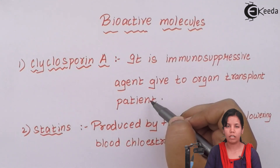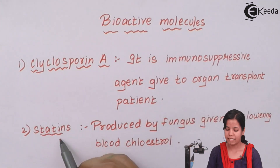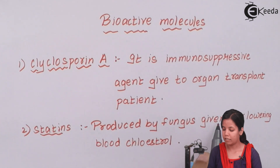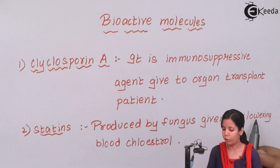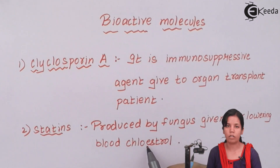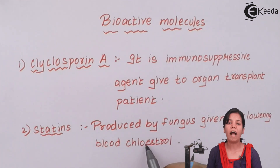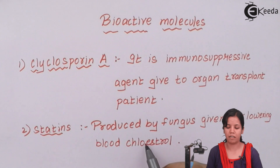The next agent is statins. They are produced by a fungus and are given for lowering blood cholesterol. Statins are given to myocardial patients or patients who have higher levels of cholesterol or blood fat.